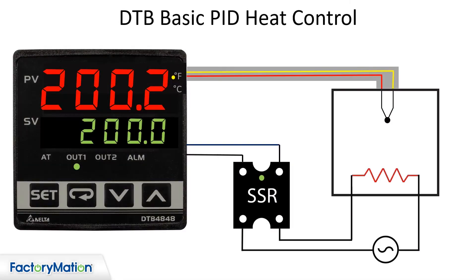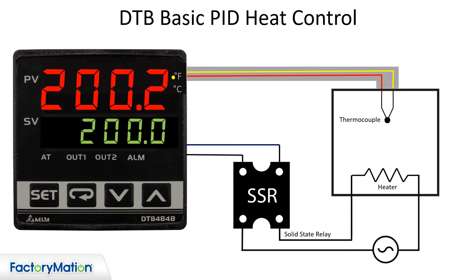The temperature in the system shown is maintained by the DTB using a thermocouple, a solid state relay, and a heater. The thermocouple provides a temperature reading to the DTB. Based on this reading, the DTB will trigger a pulsed output to a solid state relay which will energize the heating coil.